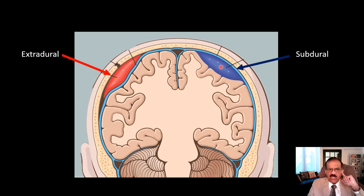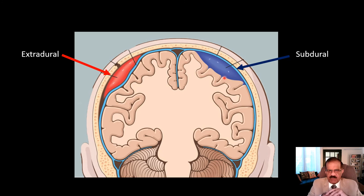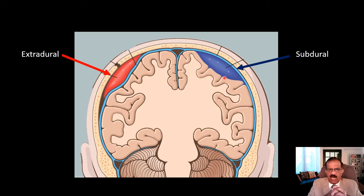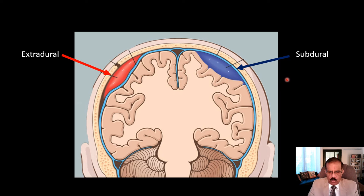Subdural hematoma typically occurs in the setting of an elderly person with trivial brain trauma. This is strange — an elderly person comes with progressive deterioration in brain function over days, with no clear onset, and often no significant history of head injury. When you ask in detail, the patient may mention a trivial fall in the house or having struck against something — trivial injury leading to this condition.